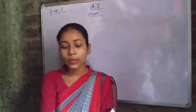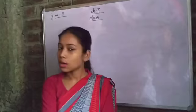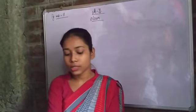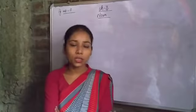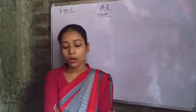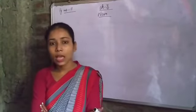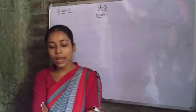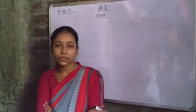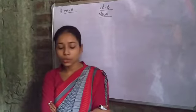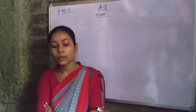Father is a man and brother is a boy — both are related to masculine gender. Mother is a woman and sister is a girl — both are related to feminine gender. Nouns that name female people or animals belong to the feminine gender. Now fill in the correct nouns to complete the tables.